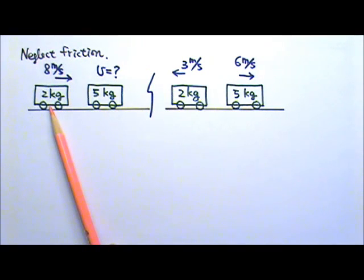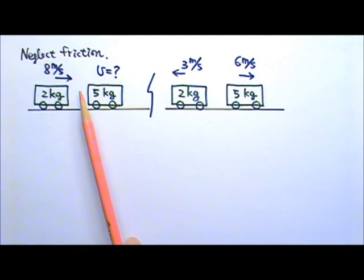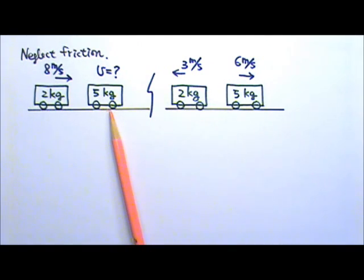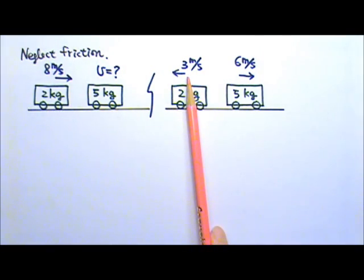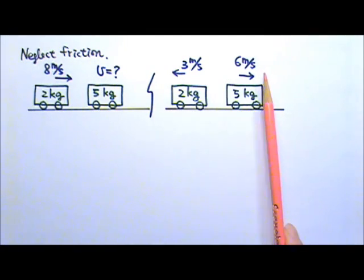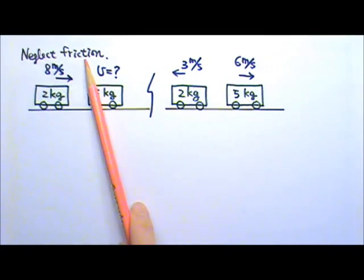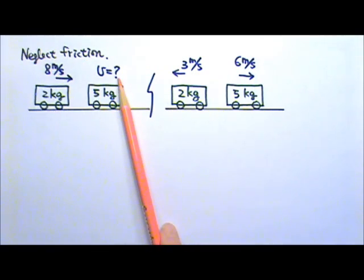A 2kg cart traveling to the right at 8 meters per second collides with a 5kg cart. After the collision, the 2kg cart travels to the left at 3 meters per second, and the 5kg cart travels to the right at 6 meters per second. If friction is negligible, what must the velocity of the 5kg cart be before the collision?